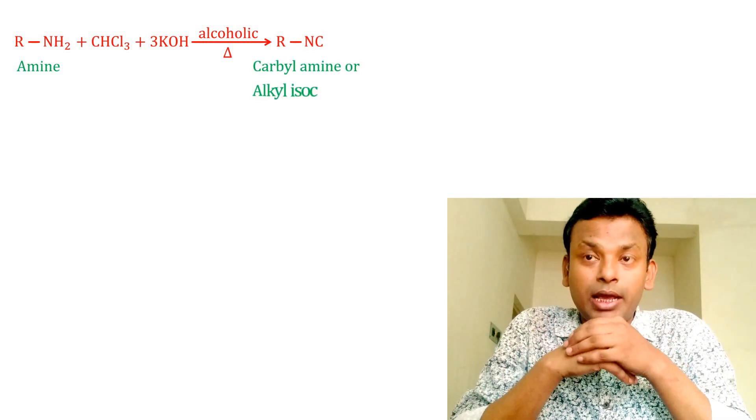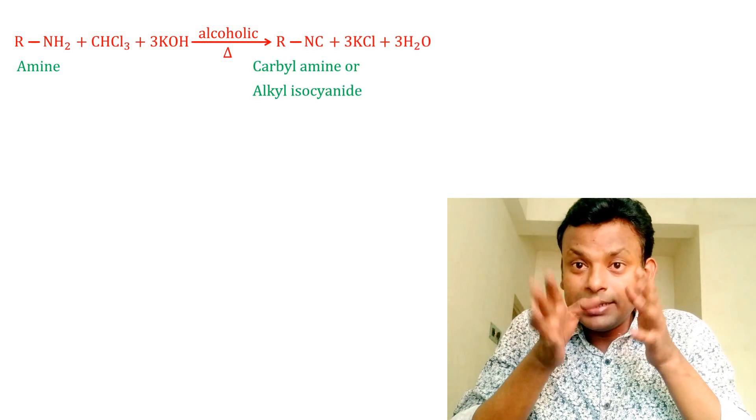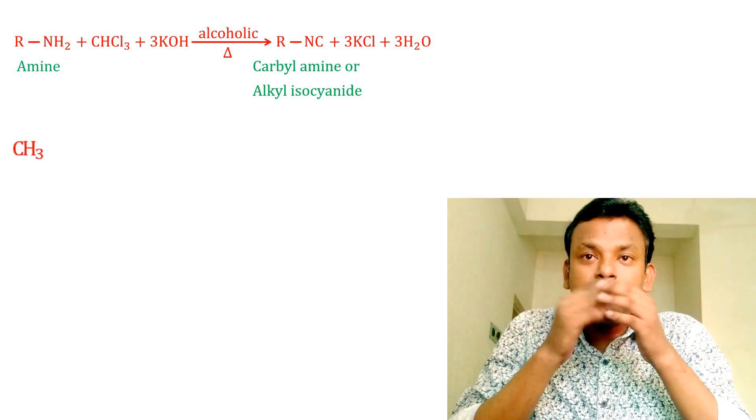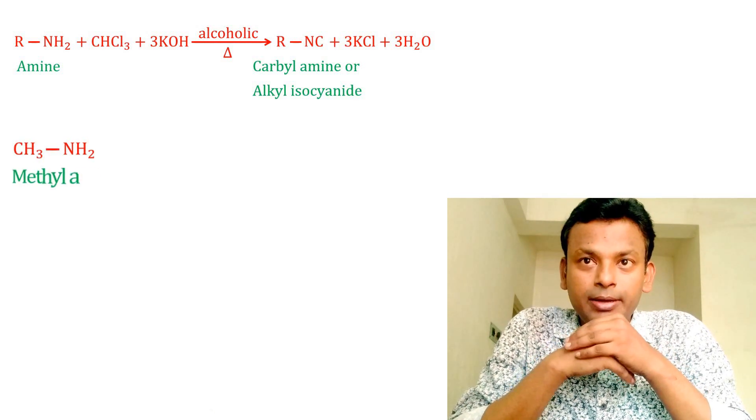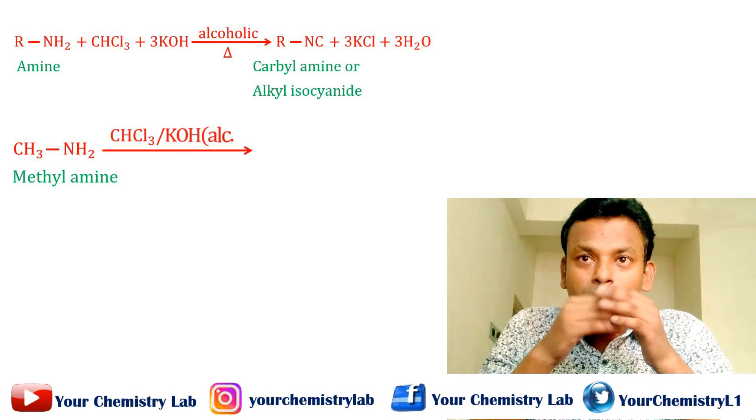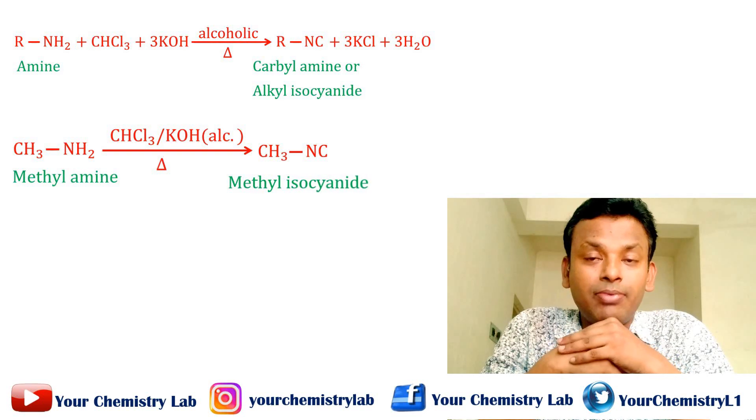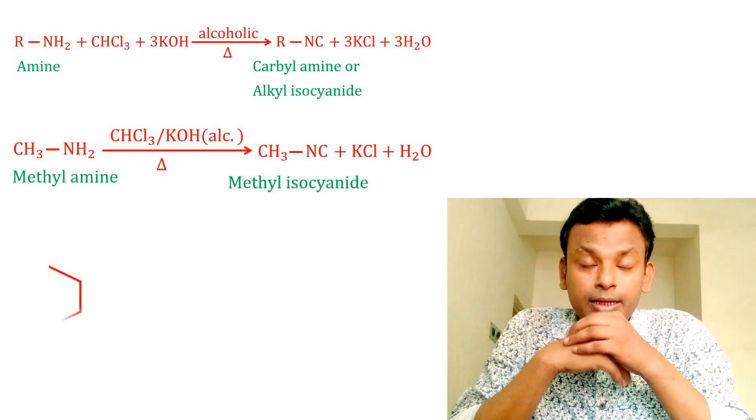Example: CH3-NH2, that is methyl amine, reacts with chloroform and alcoholic KOH to give methyl isocyanide plus KCl plus water. Another example: aniline, an aromatic amine, reacts with chloroform and alcoholic KOH to give phenyl isocyanide, that is carbyl amine.